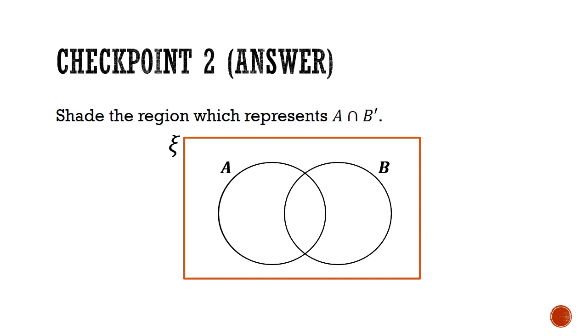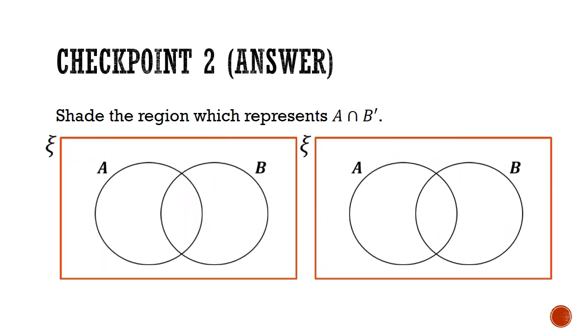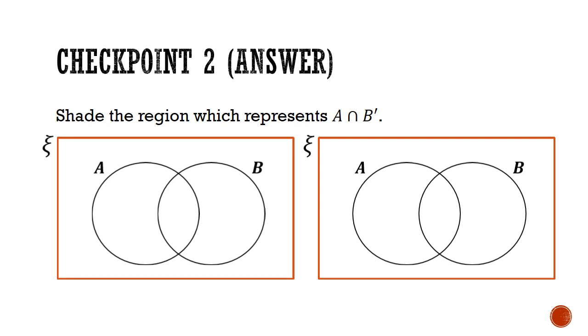Let's go through the solution. A way to scaffold your thinking is to consider A and B' separately. So what I'm going to do is to split my Venn diagram. So we're going to do two different Venn diagrams and combine it later. So for the one on the left, I'm going to shade the region of A. And for the one on the right, I'm going to shade the region B' and that is everything outside of B.